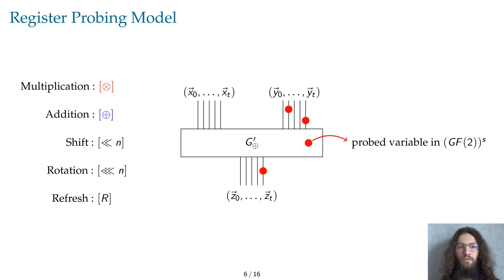Just as before, the attacker can choose T probes inside a T+1 shared circuit that can now contain some new gadgets. More precisely, the gadgets we consider are addition and multiplication gadgets that perform the logical XOR and AND gates, as well as rotation and shift gadgets plus refresh gadgets.